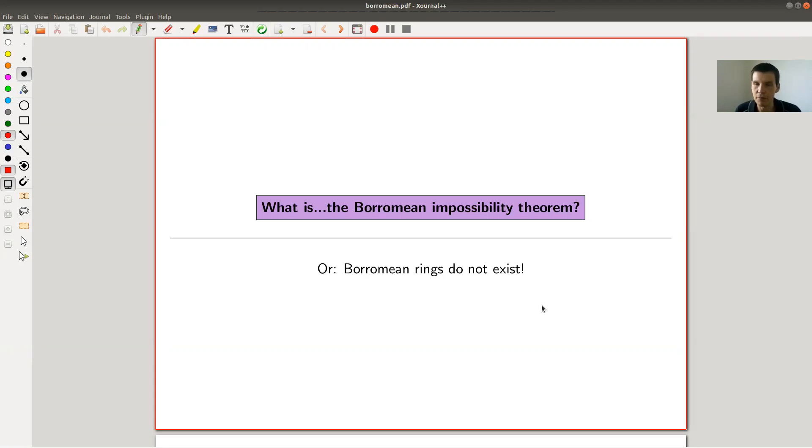Today's topic are the Borromean rings, or basically why they don't exist. In some sense, I'm going to explain why the standard optical illusion, the Borromean rings, are really an optical illusion.